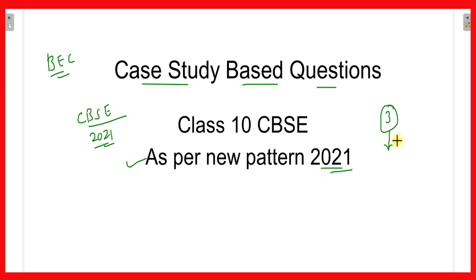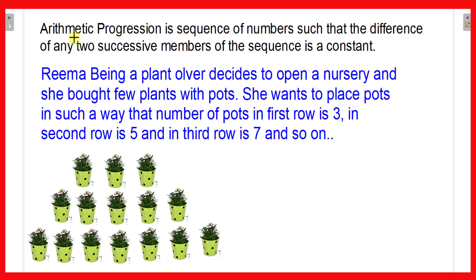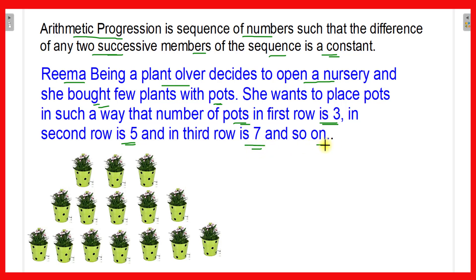Now, without wasting time, let us see today's question. Here is a question on the screen about Arithmetic Progression. An arithmetic progression is a sequence of numbers such that the difference of any two successive members of the sequence is a constant. It is given that Rima, being a plant lover, decides to open a nursery and bought a few plants with pots. She wants to place the pots such that the number of pots in the first row is 3, second row is 5, and third row is 7, and so on.